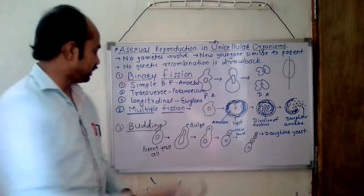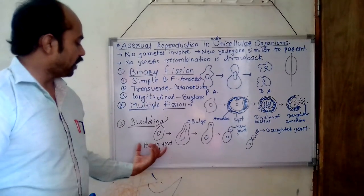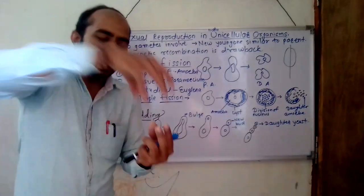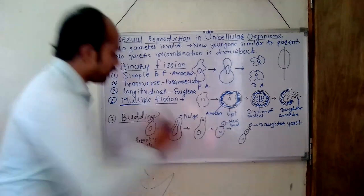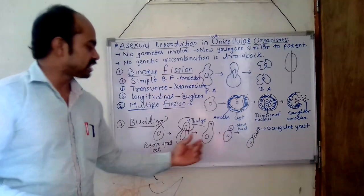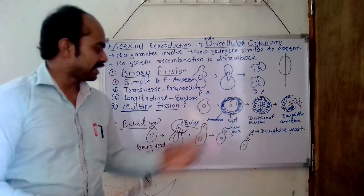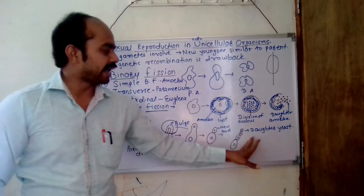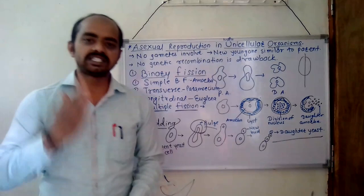There is another type of asexual reproduction known as budding. In budding, there is a yeast cell. If a parent yeast cell is observed after three to four days, we observe a particular bulge — a protuberance or extension — and that extension is known as the bulge. This bulge continues to grow and the cytoplasm and nucleoplasm get divided. Slowly, the single nucleus divides into two parts, separating into the bulge and the original parent body. Gradually, after some days, the daughter yeast is formed. This is known as budding. These are the types of asexual reproduction.